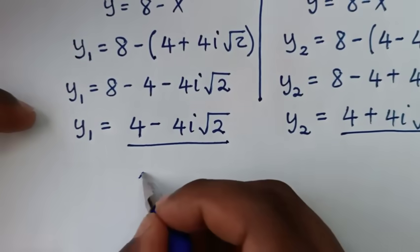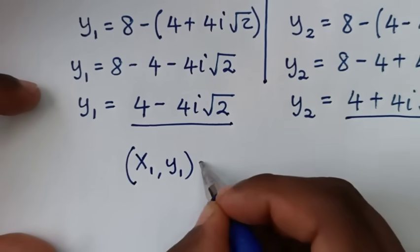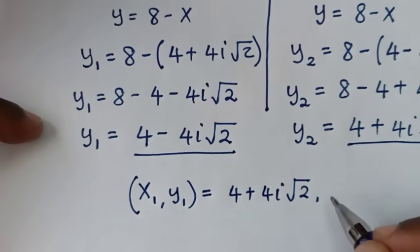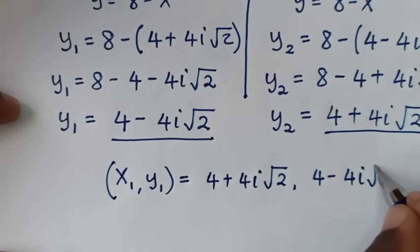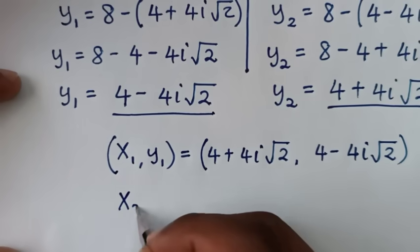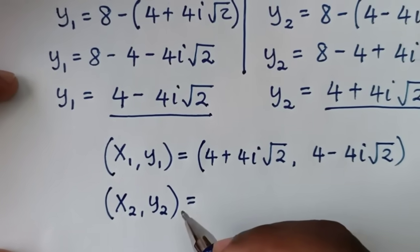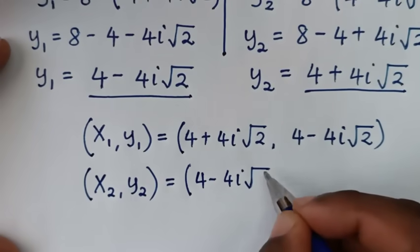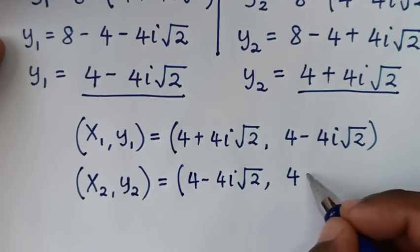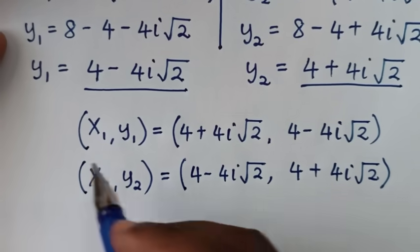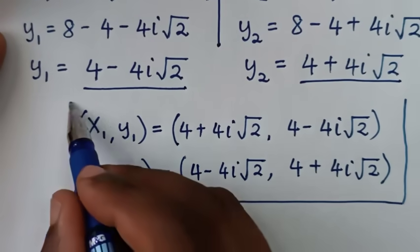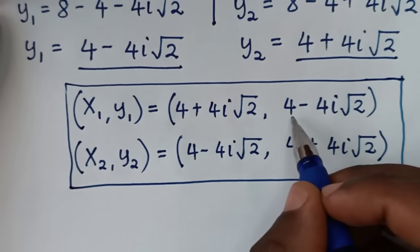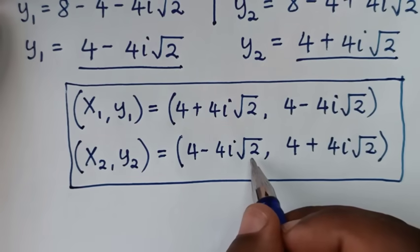Now our conclusion. The first solution is x1, y1: x1 is 4 plus 4i square root of 2, y1 is 4 minus 4i square root of 2. And the second solution x2, y2: x2 is 4 minus 4i square root of 2, y2 is 4 plus 4i square root of 2. We have two solutions, and the value of x from the first solution is the value of y from the second solution, and vice versa.